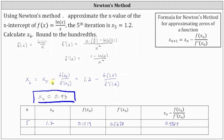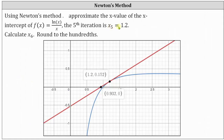Let's look at a graph. Because x₅ is 1.2, the sixth iteration x₆ is the x-intercept of the tangent line to the curve at x equals 1.2. On the graph, the point on the original function at x equals 1.2 has a red tangent line, and its x-intercept is approximately 0.93 — exactly what we found for x₆ using Newton's method formula. I hope you found this helpful.